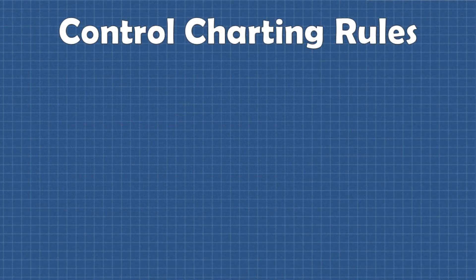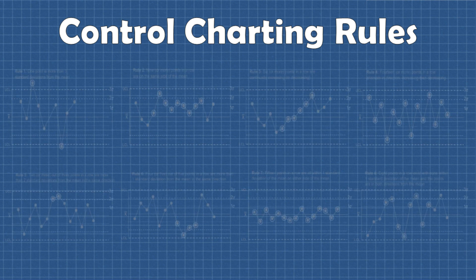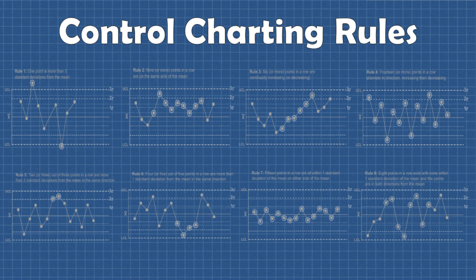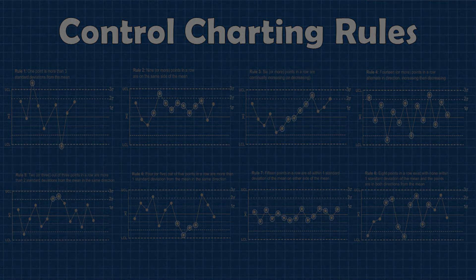I'll be discussing how to interpret control charts and the eight control charting rules. These are known as the Nelson rules, one of which I covered in the last video and the other seven being rules that can be employed to increase chart sensitivity and detect certain signals in our processes.